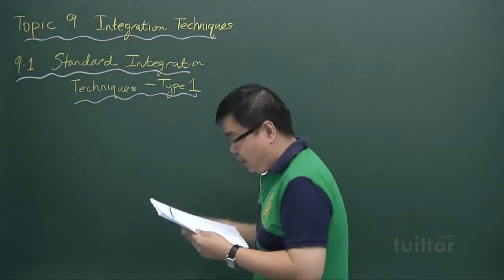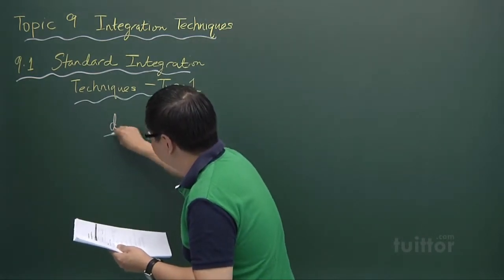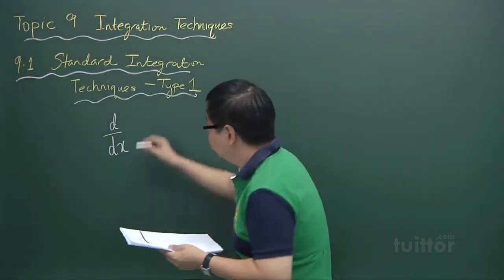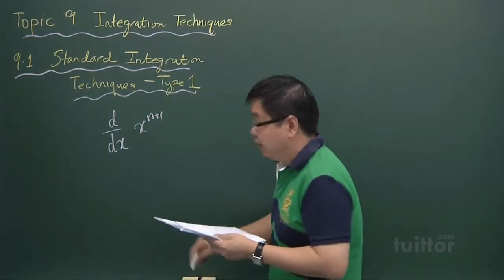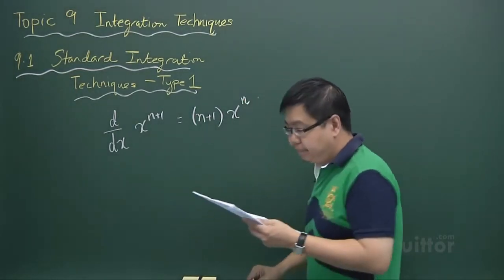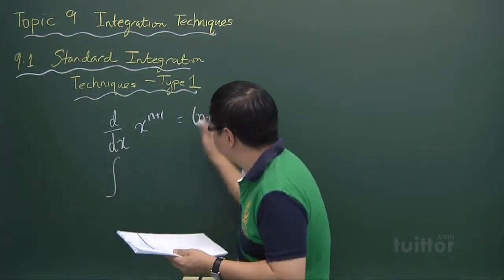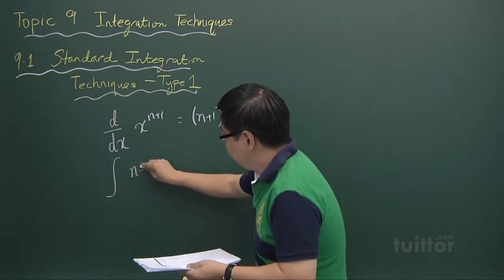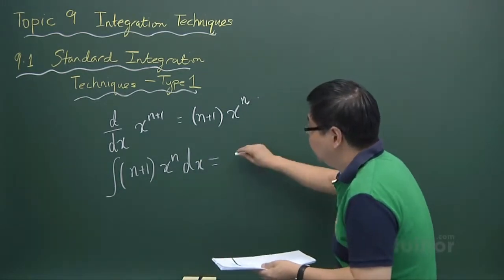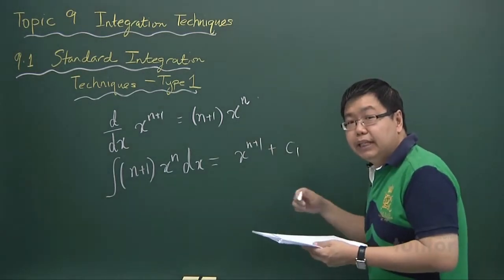How do we go about doing this kind of problem? If you download from my handout, I give in the form of a table the following. We all know that integration is basically the reverse of differentiation. So for example, if you differentiate x to the power of n plus 1, that will give me n plus 1 multiplied by x to the power of n. So in a similar context, if we integrate n plus 1 times x to the power of n dx, we get x to the power of n plus 1 plus some constant c1, where c1 is any arbitrary constant.